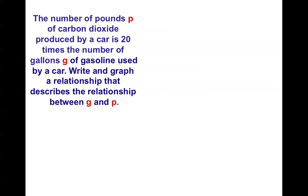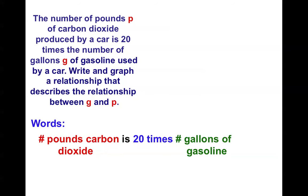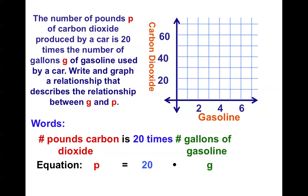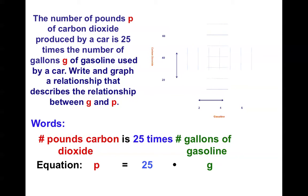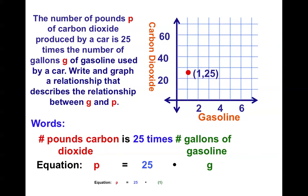Okay, so we had some word problems, and we can definitely use these words to help us create our function. The number of pounds of carbon is 20 times the number of gallons of gasoline. So pounds of carbon for P means equals 20 times the gallons of gasoline for G. I could graph that. Now, if I don't use any gallons of gasoline, obviously I've produced no pounds of carbon. But if I used one gallon of gasoline, 20 times 1 is 20. And if I used two gallons of gasoline, well, 20 times 2 is 40. And I can graph that relationship. If we change the numbers, it just changes the steepness of the line.